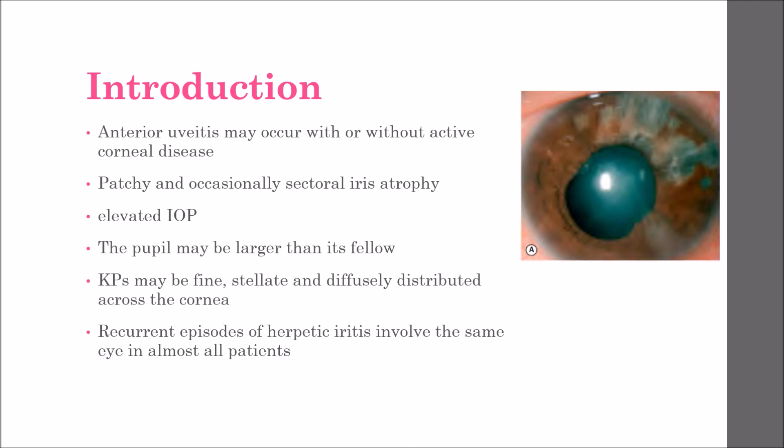Sectoral and occasionally patchy sectoral iris atrophy that includes the pigment epithelium is common, as is elevated IOP. The pupil may be larger than its fellow. KPs may be fine, stellate, and distributed across the cornea, as in Spokes-Levy-Ditt syndrome, but can also be large and grouped together.